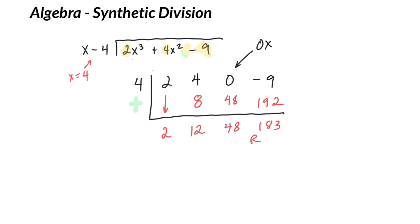Remainder. No x, x, x squared. So 2x squared plus 12x plus 48 with a remainder of 183.